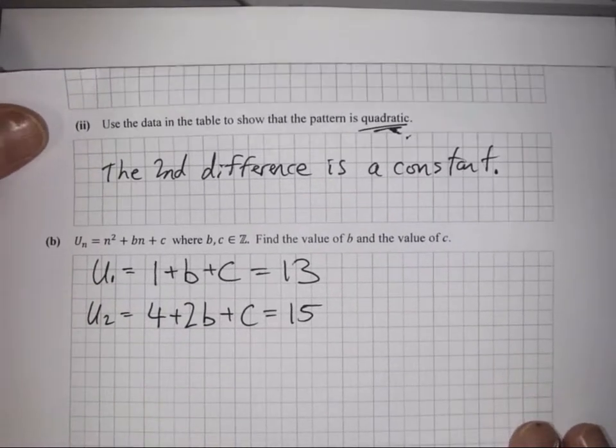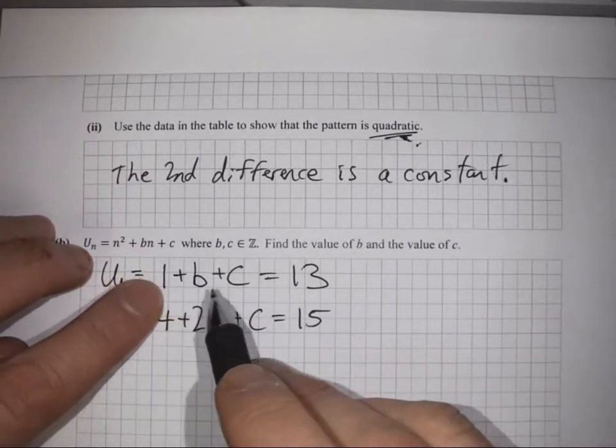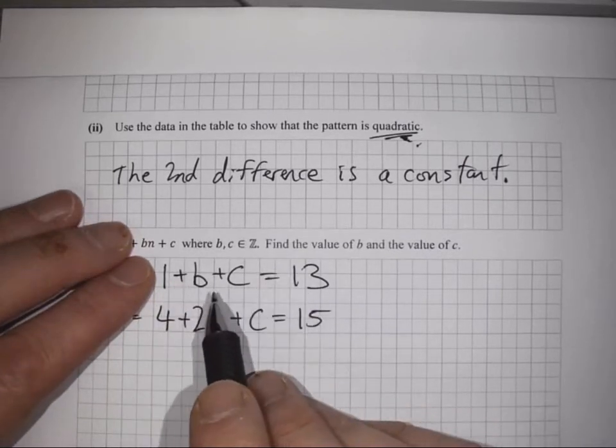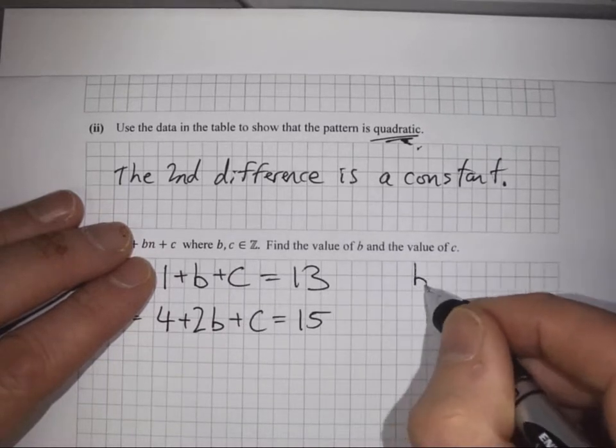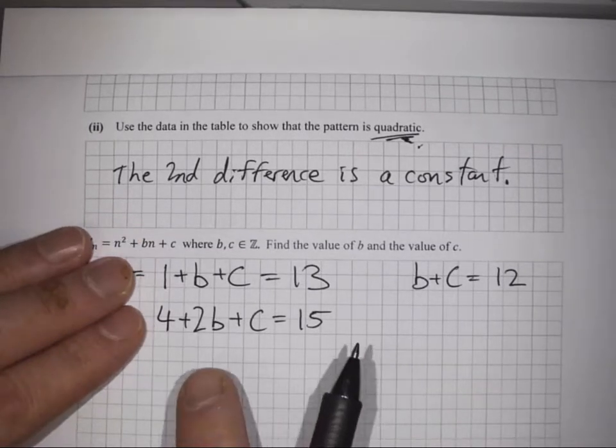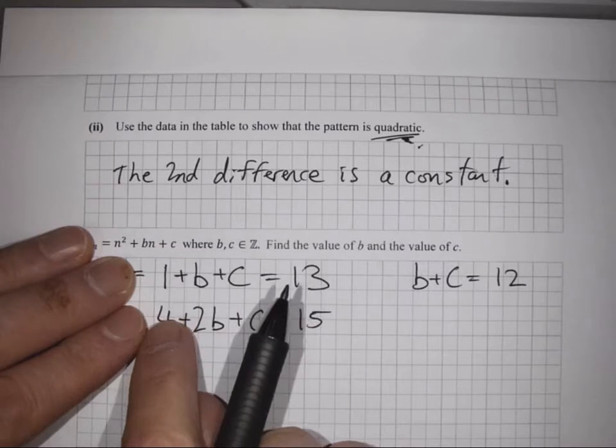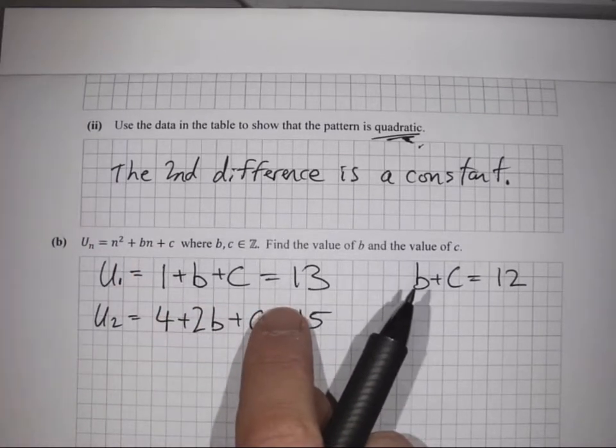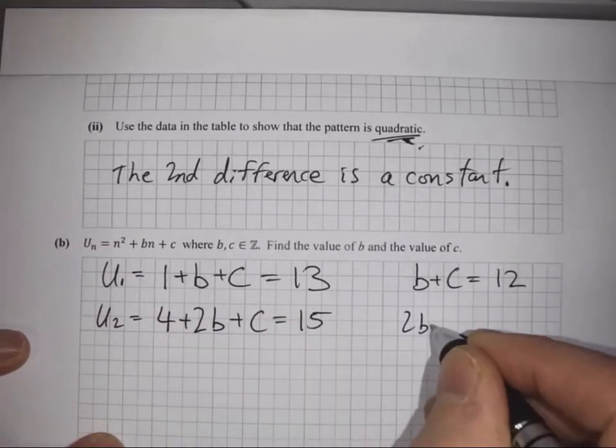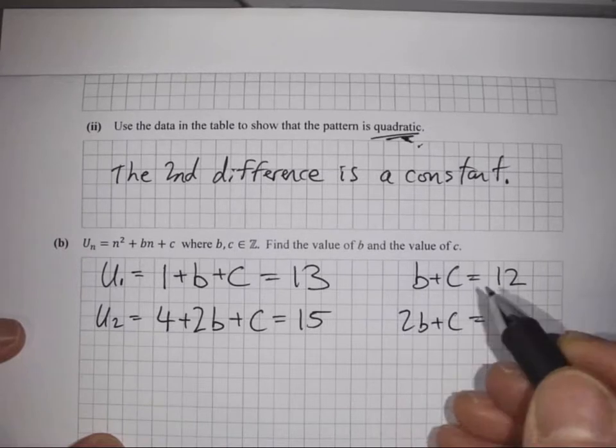Now we can tidy up these equations. In this first one, I'm going to subtract 1 from both sides so that I'll have b plus c equals 12. In the second equation, 4 plus 2b plus c equals 15, I'm going to subtract 4 from both sides, giving me 2b plus c equals 11.